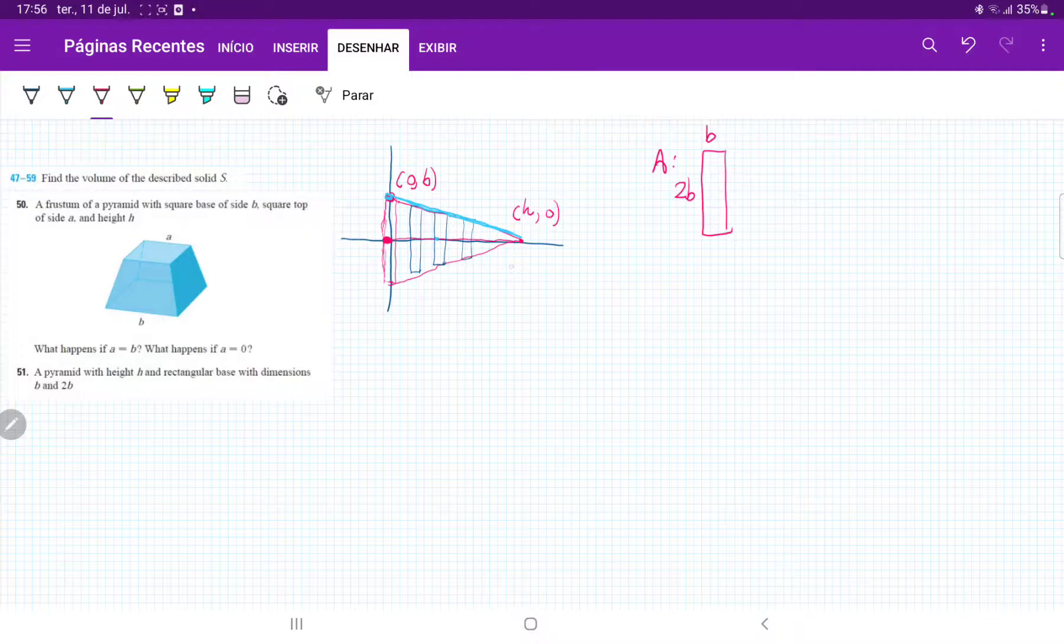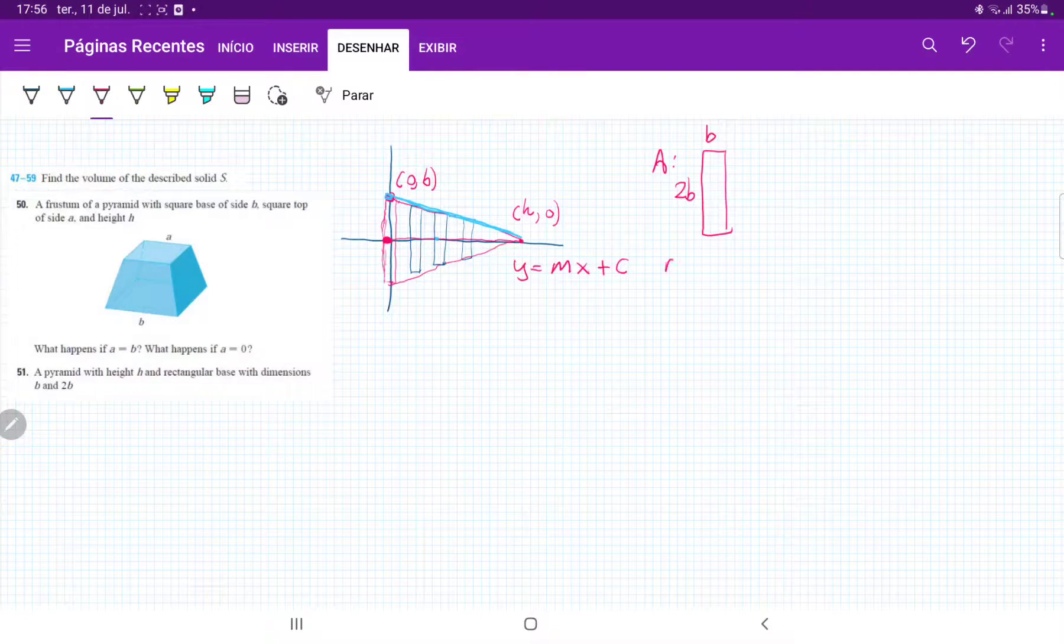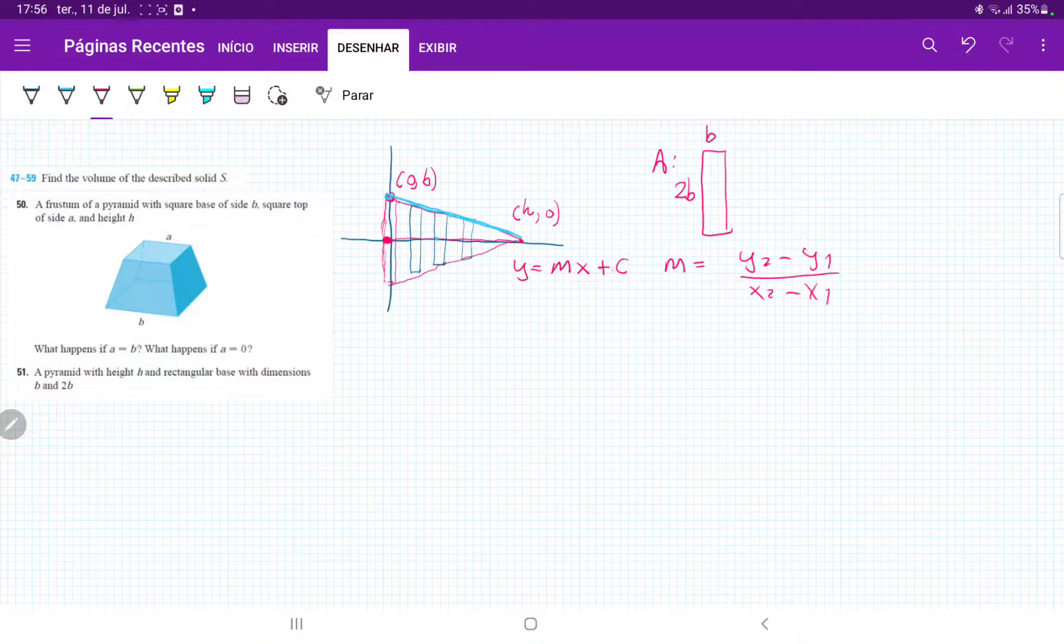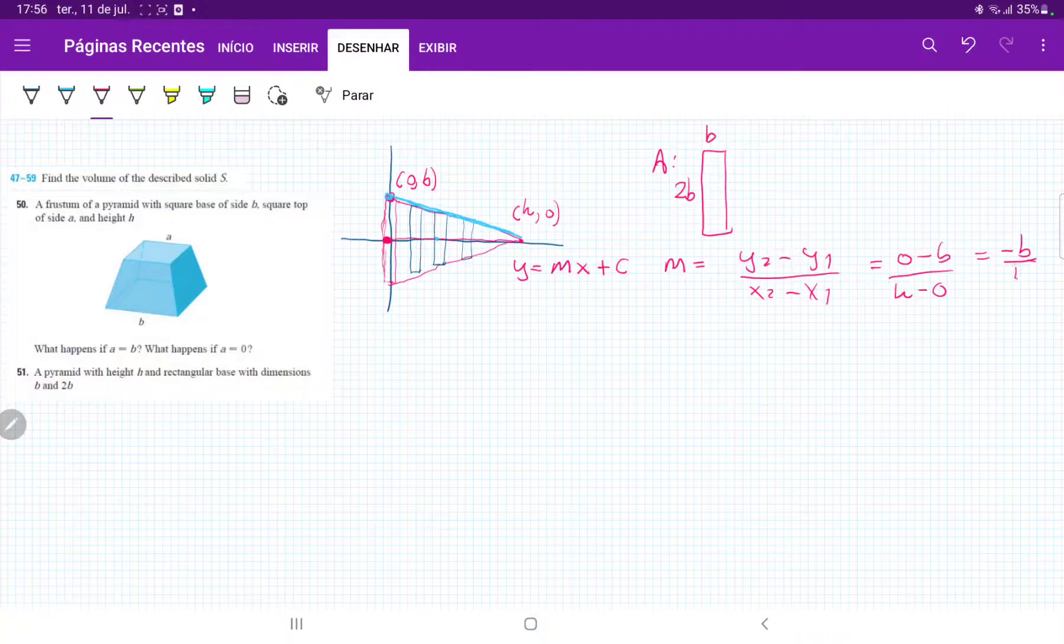So this is a linear function of y equals mx, and I've already used b here, so I'm just going to put plus c for the y-intercept, where m equals y2 minus y1 over x2 minus x1. So if I plug in these points, where this is point 2 and that one is point 1, I'm going to get 0 minus b over h minus 0, which is going to be just minus b over h.